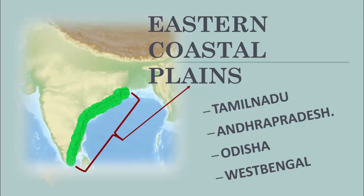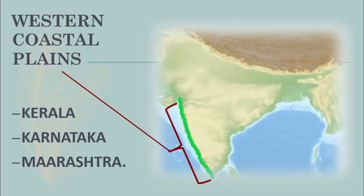Look at the green border on the map, children — these are the Eastern Coastal Plains, on the eastern side of India along the Bay of Bengal. Large portions of states like Tamil Nadu, Andhra Pradesh, Odisha, and West Bengal fall in it. On the western side of India are the Western Coastal Plains; states like Kerala, Karnataka, and Maharashtra come under it.